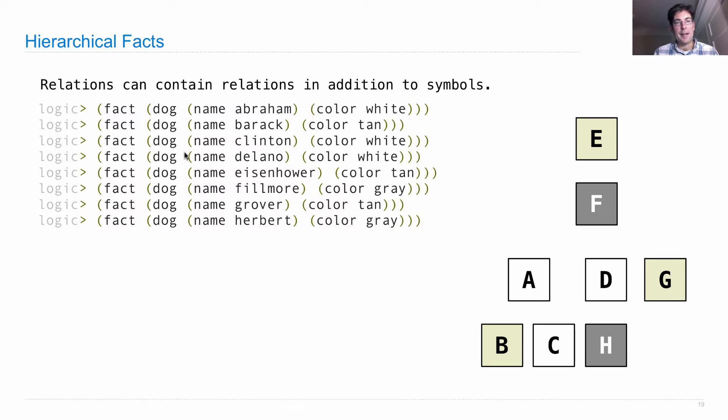But I've stated information about their color in these nested structures as opposed to just a flat fact. Now these are still simple facts in the sense that all I'm doing is stating the conclusion of the fact. There are no hypotheses that need to be satisfied in order for this fact to be true.